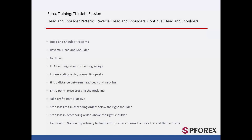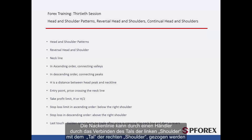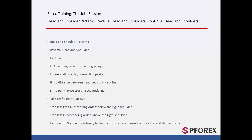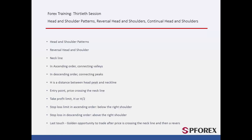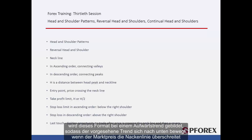Neckline downtrend. The neckline can be drawn by a trader through connecting the valley of the left shoulder to the valley of the right shoulder. The left valley is between the left shoulder and head, while the right valley is between head and right shoulder. Due to the fact that head and shoulder is a reversal pattern, this format will be formed on the upward trend. Consequently, the foreseen trend would be downwards as market price crosses the neckline.